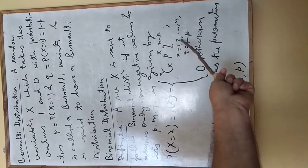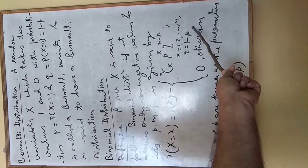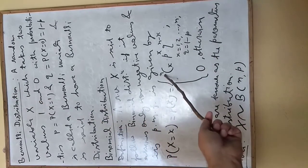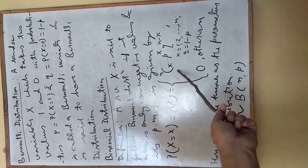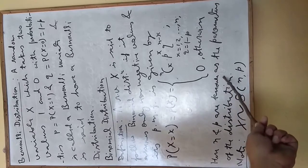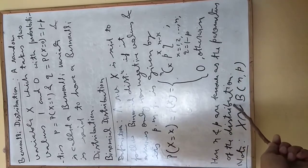Where x varies from 0 to n and q equals 1 minus p, otherwise it is 0. This nCx means factorial n divided by factorial x times factorial n minus x. Here, n and p are known as the parameters of the distribution.